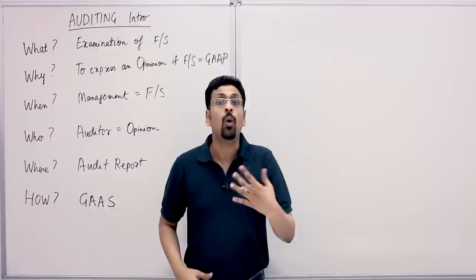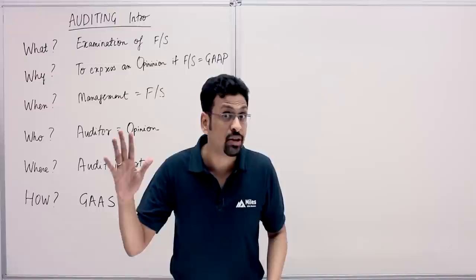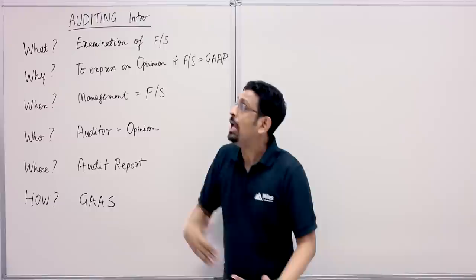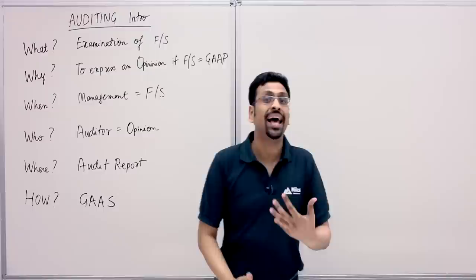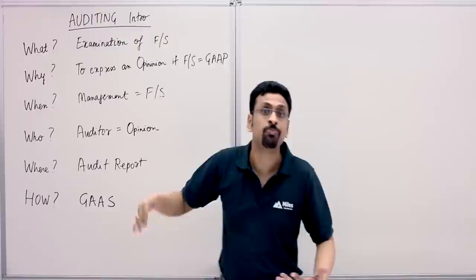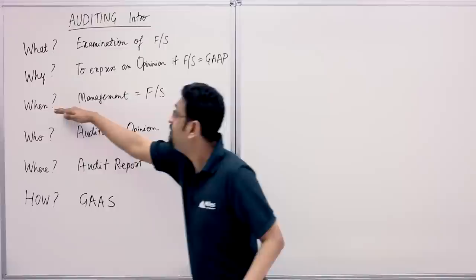To understand audit in a nutshell, we'll use a famous questioning technique known as the Five W's and the One H. We start with: what is an audit? An audit is an examination of financial statements. Why is an audit done? It's done to express an objective opinion as to the fairness of financial statements as per GAAP — that's Generally Accepted Accounting Principles. Audit makes the financial statements credible.